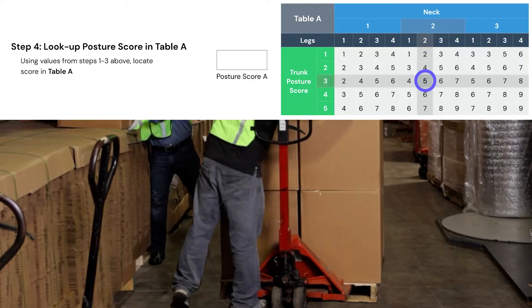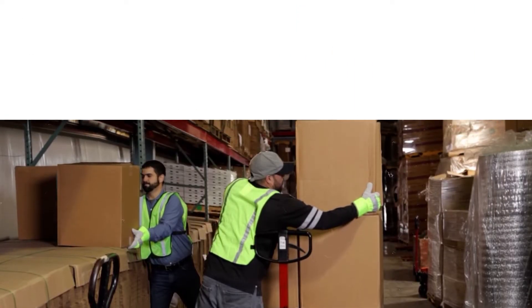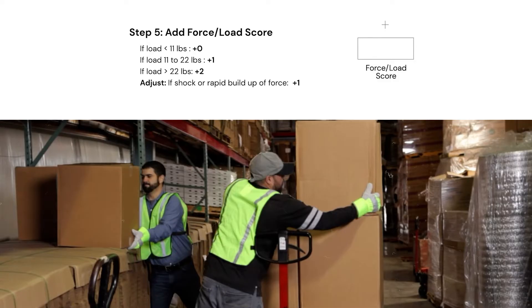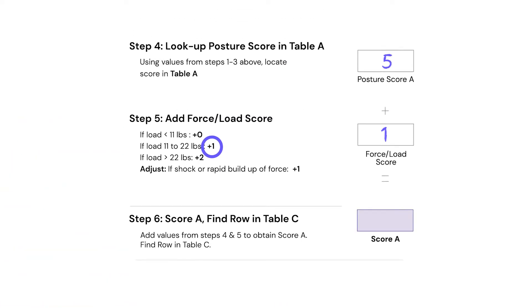Once we're in step four, we're merely going to drag and drop that conversion factor in there. Step five is where we have a load and movement analysis — let's imagine the boxes they're moving are 12 to 15 pounds. We're going to represent that in step five and carry that over to the corresponding box. Step six at the bottom of the column is simple: all you're going to do is add steps four and five together, and this gives you your column A score.